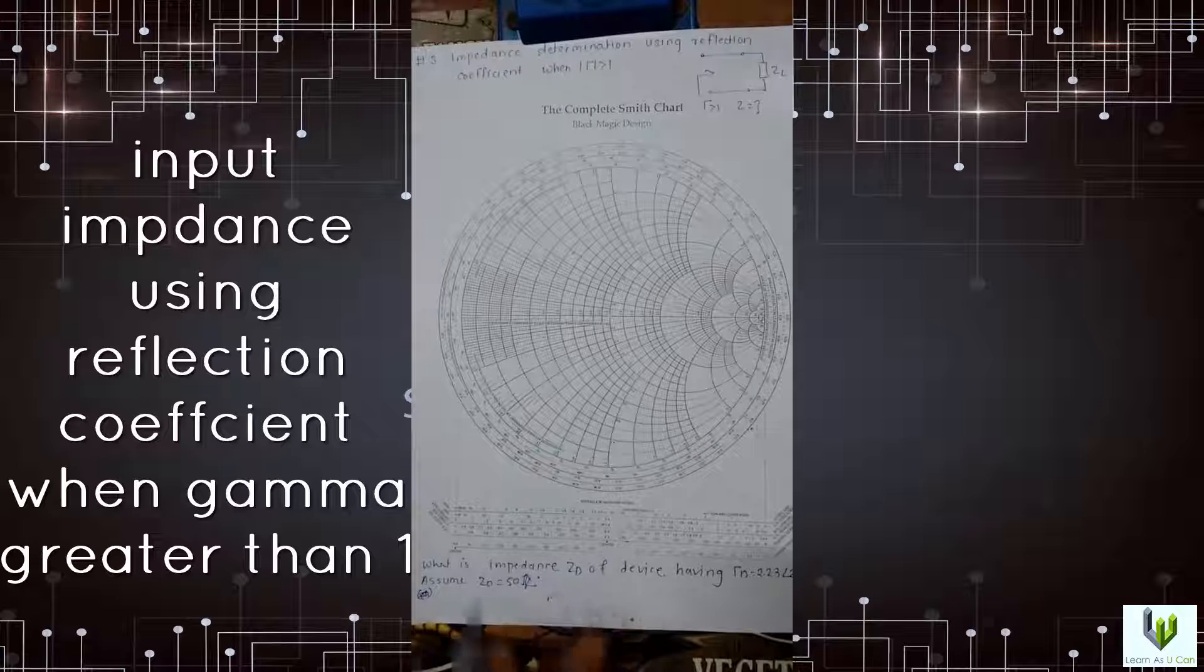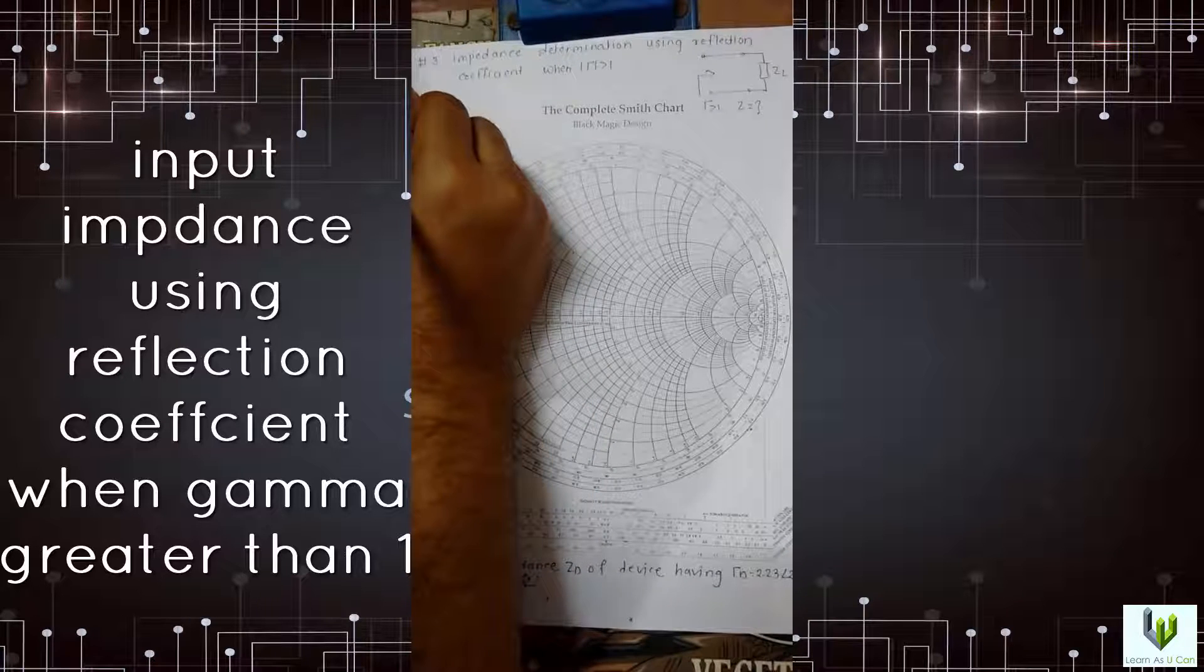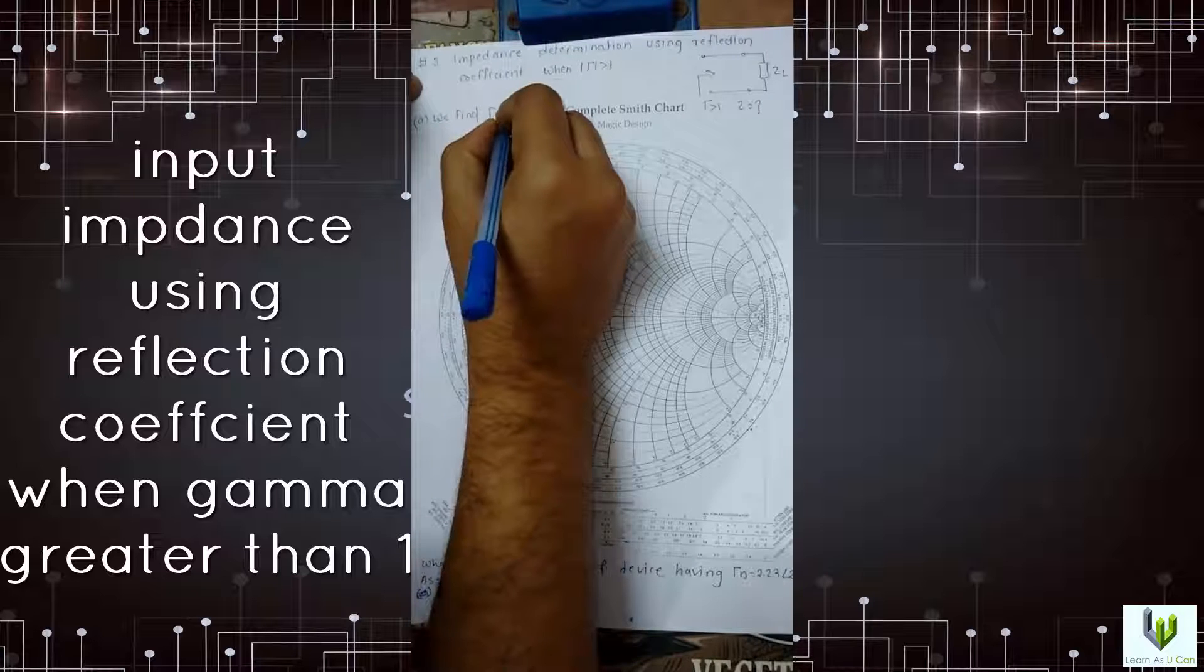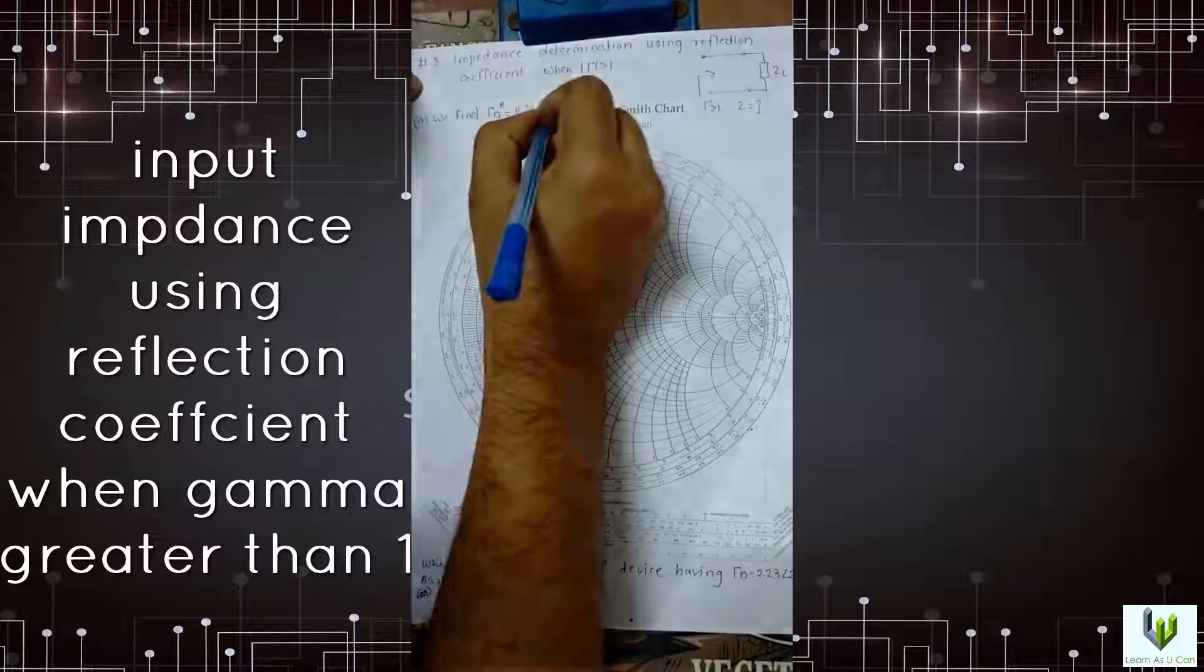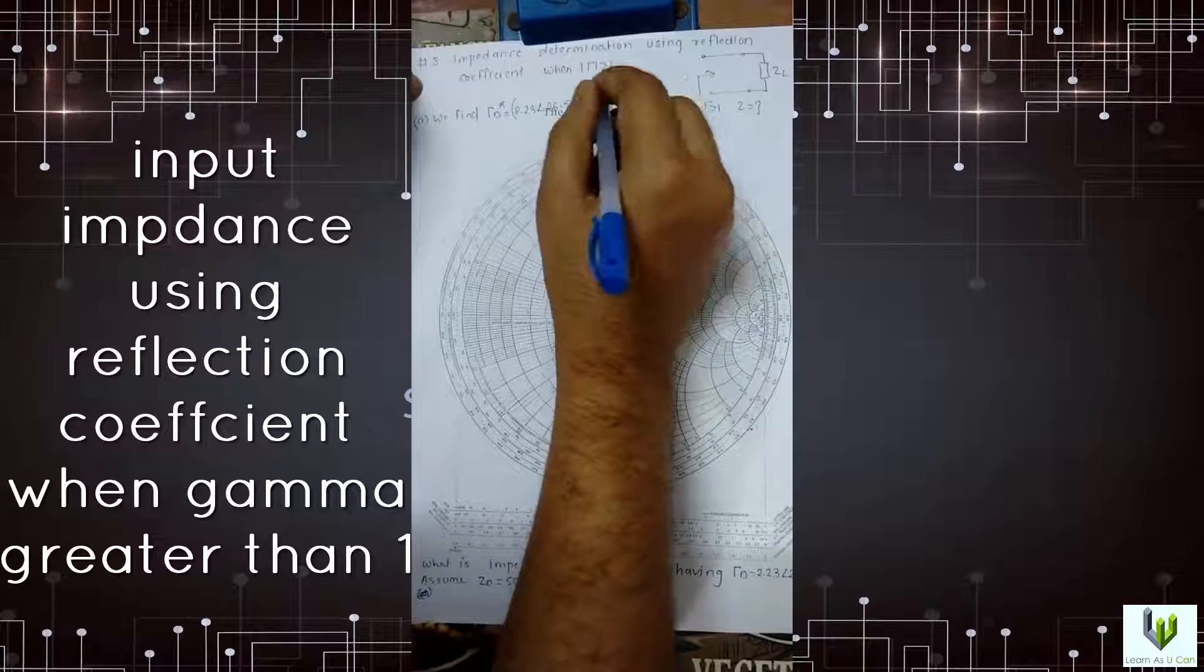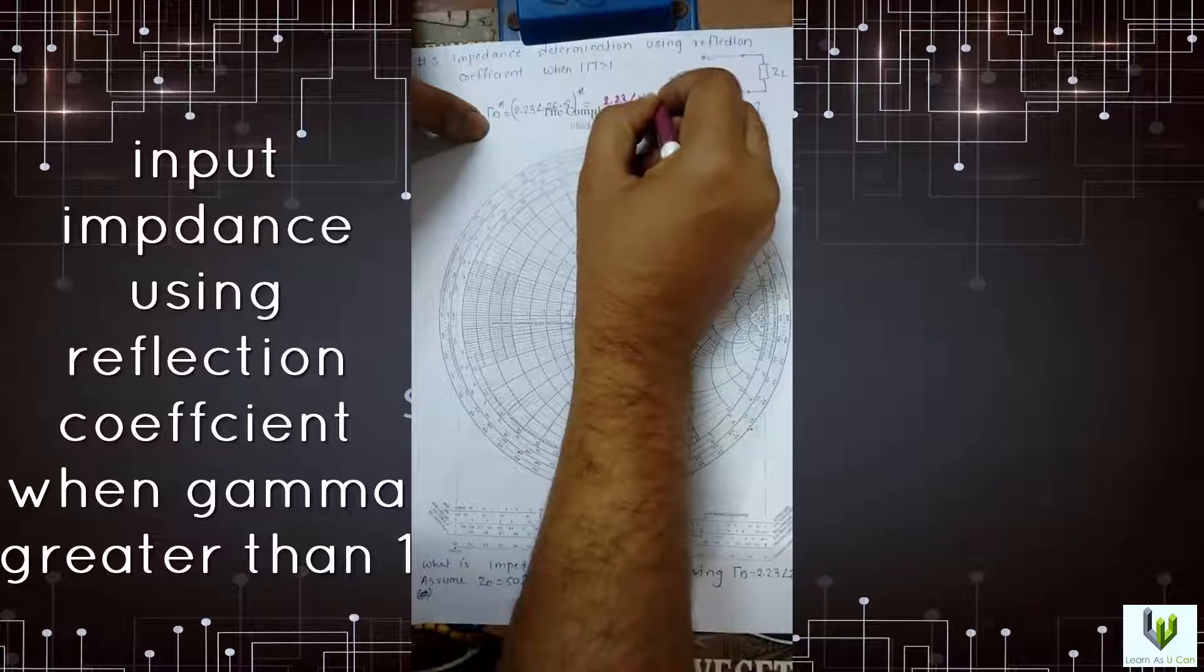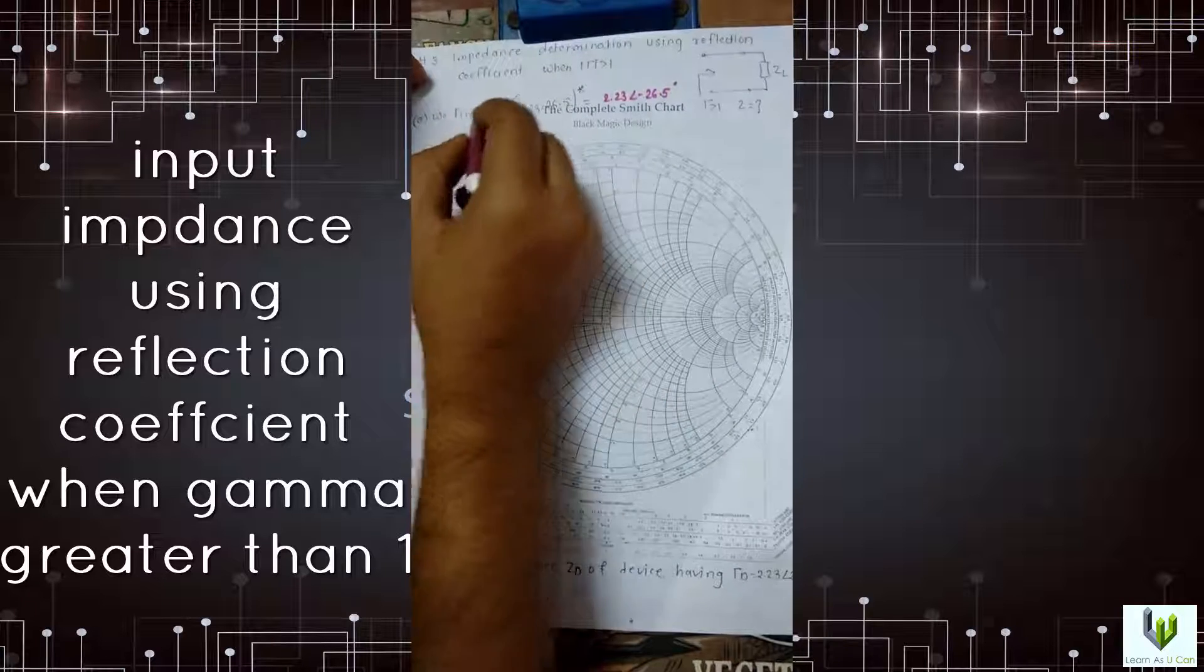So how to plot this on the circle? One method is there. The first step is we have to find gamma D conjugate, which is equal to 2.23 angle negative 26.5. For conjugate, just replace this angle by minus. You got this gamma D value.